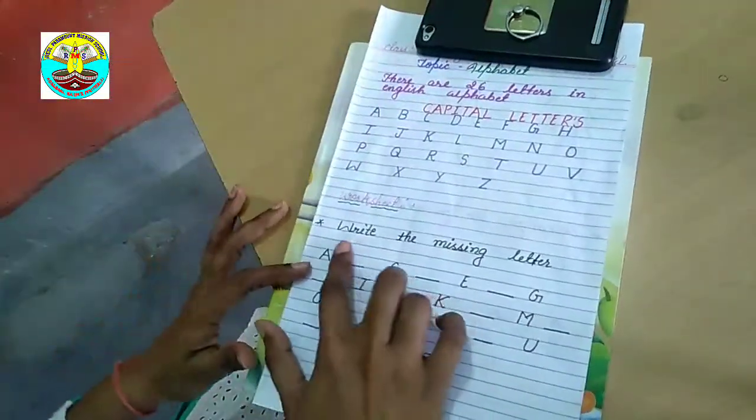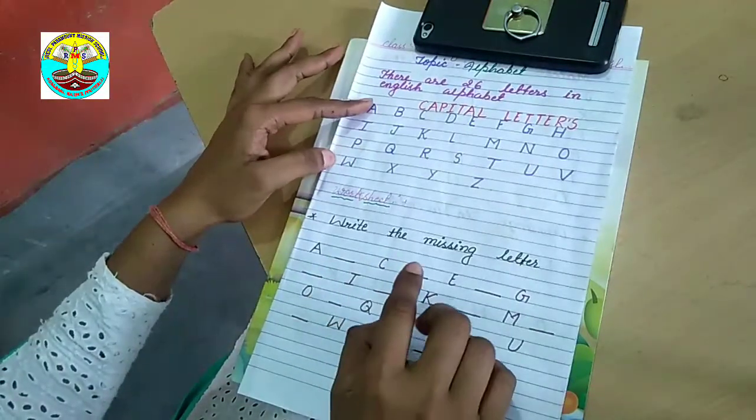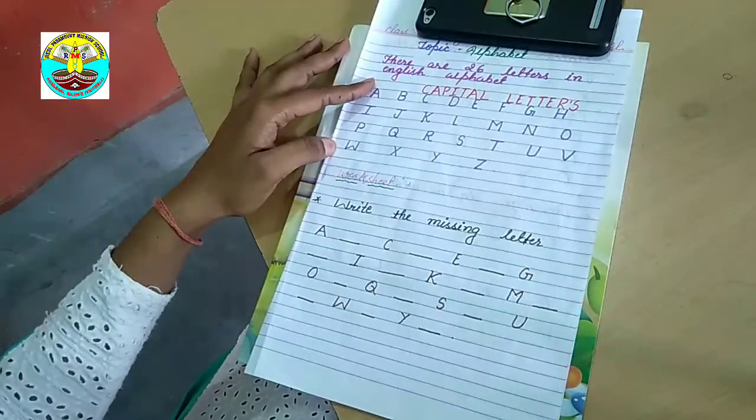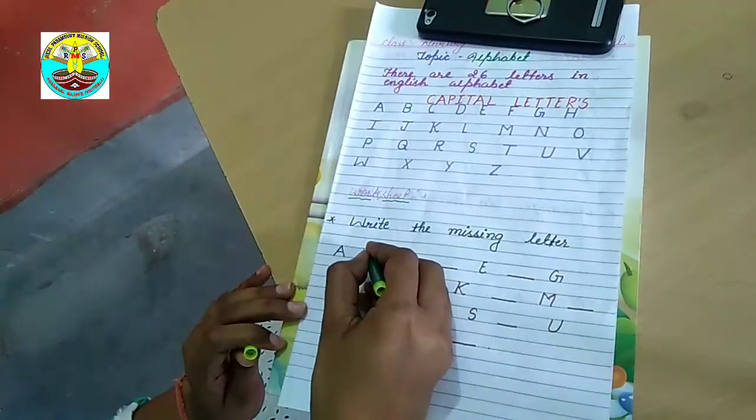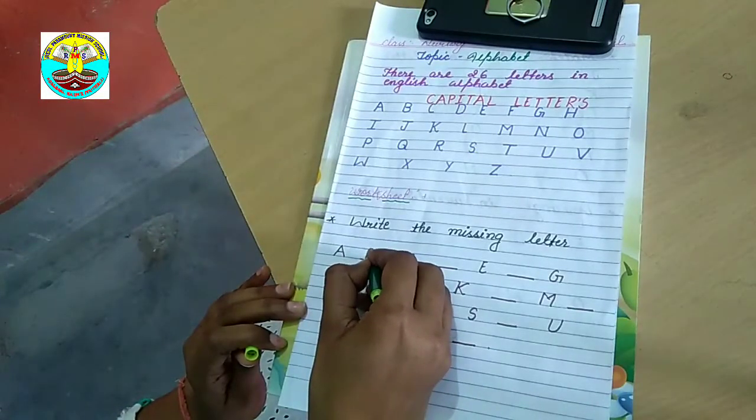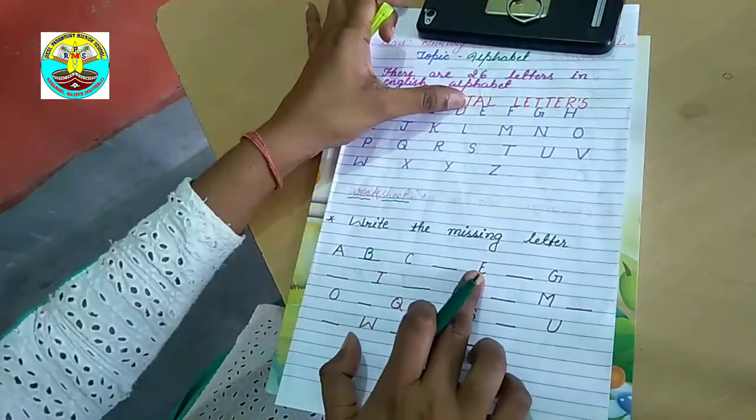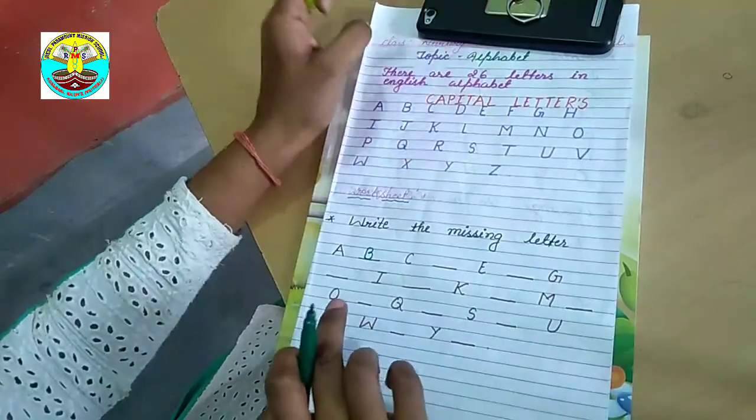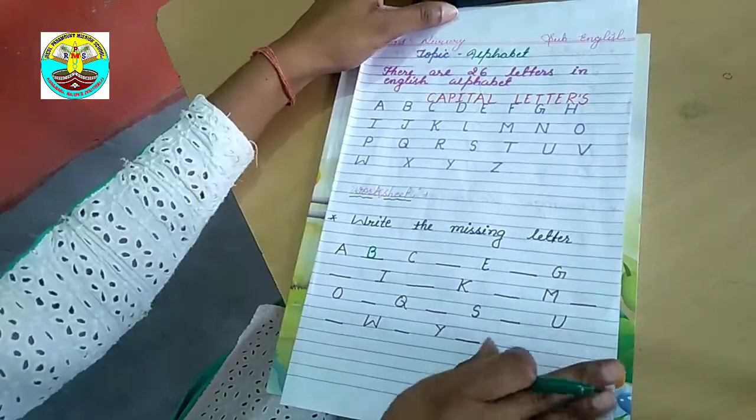First worksheet is write the missing letter. This capital letter which we have read, it is related to missing letters. I will write the letters. What is it? A after B, so B fill the letter. Next, C after D, D fill the letter. After F we will do G, after H, and we will complete this.